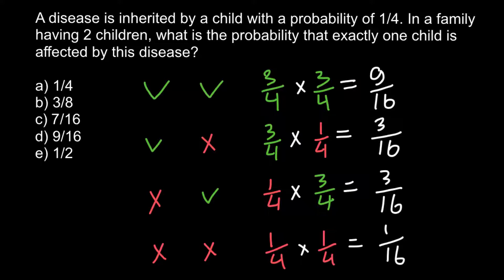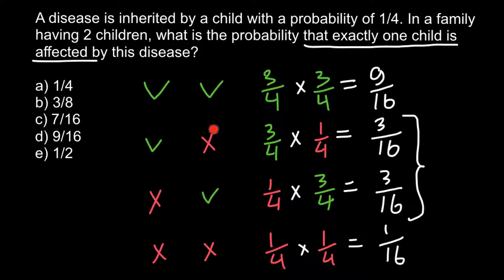Our question is to find the probability that exactly one child is affected. We can see this in two variants: in the second variant the second child is the one affected, and in the third variant the first child is the one affected. So exactly two variants are possible, meaning we have to use the second rule and combine these probabilities.